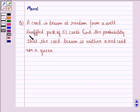The question says, a card is drawn at random from a well-shuffled pack of 52 cards, find the probability that the card drawn is neither a red card nor a queen.